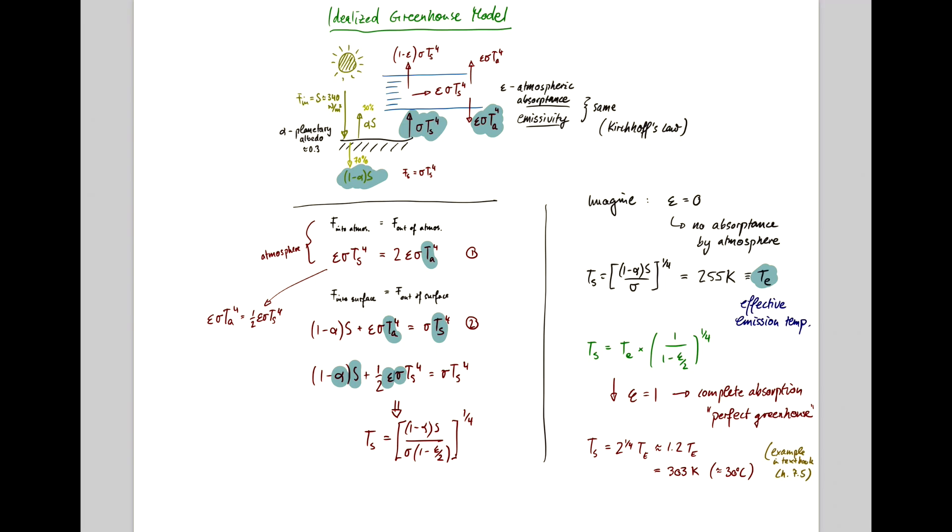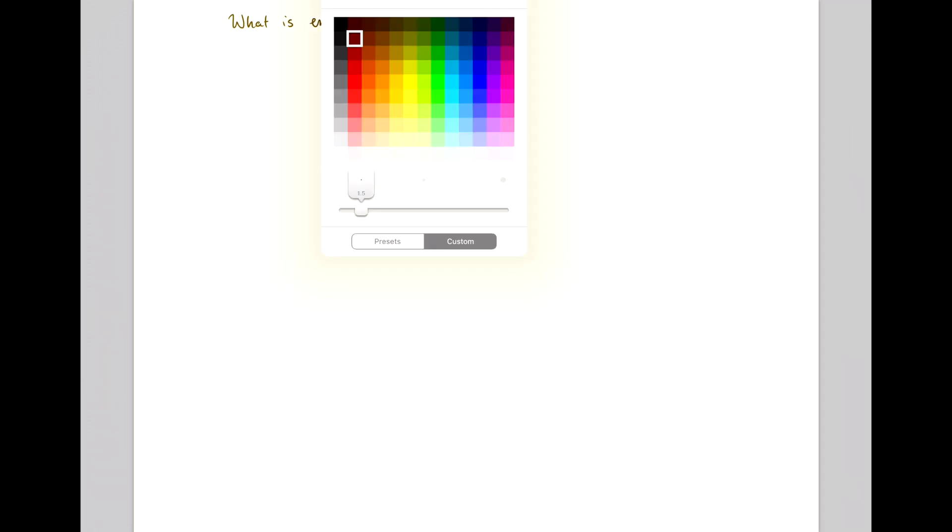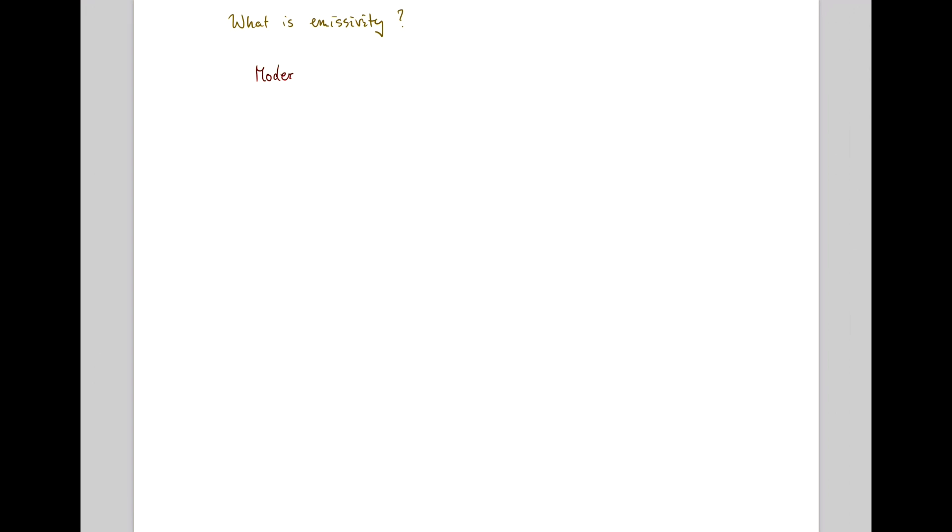We'll consider a couple of cases. The question is, what is emissivity in the atmosphere? For the modern climate, it's been found that epsilon is about 0.78. If you plug that into your equation, you'll find that T_s is roughly 1.13 times T_e, which corresponds to 288.3 Kelvin.